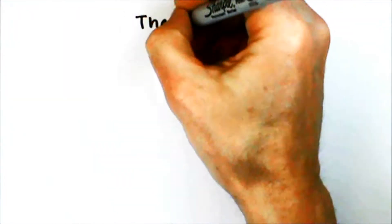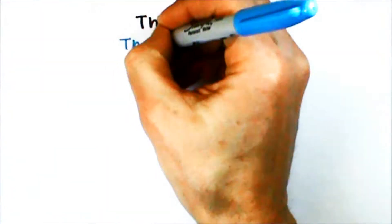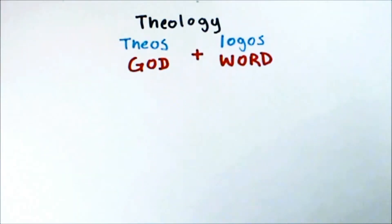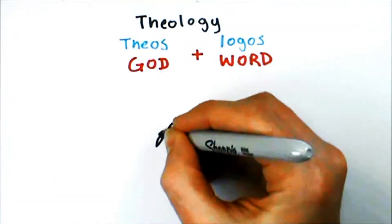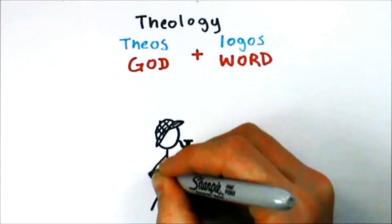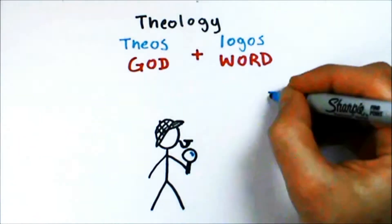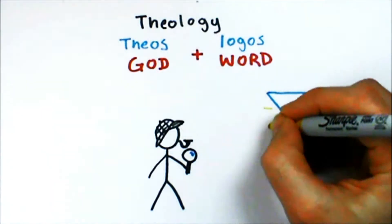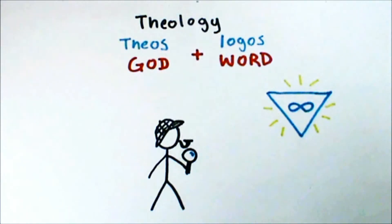The word theology is made up of two Greek words, the word for God, Theos, and the word for word, Logos. Just like zoology is the study of animal life and anthropology is the study of human life, we might say that theology is the study of Theos, God.